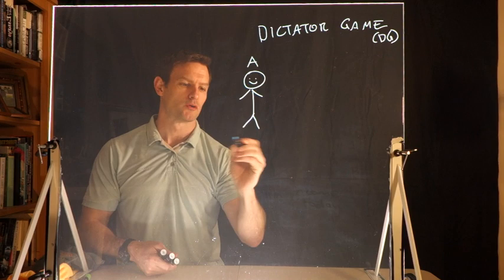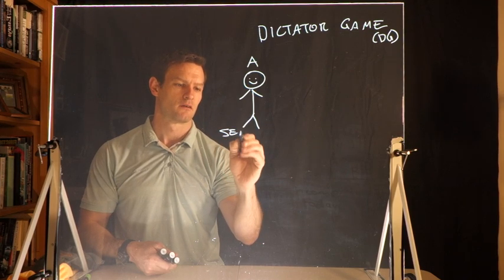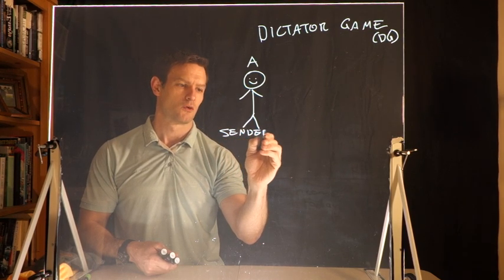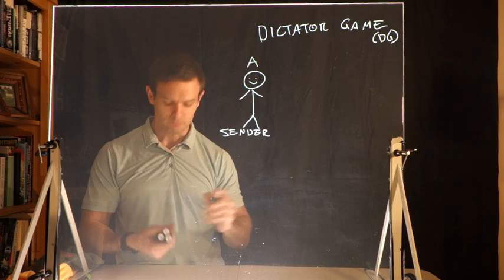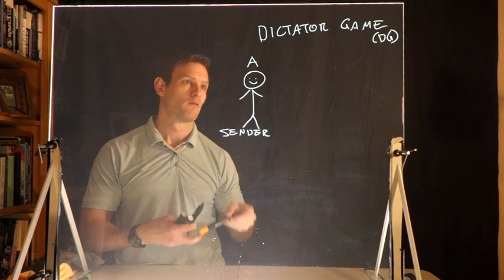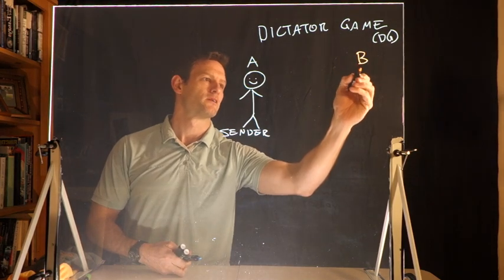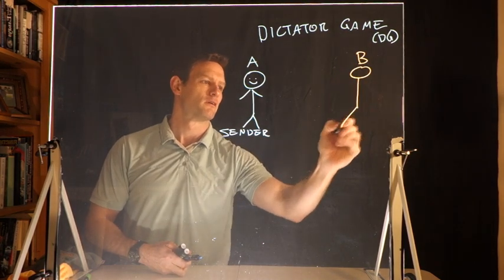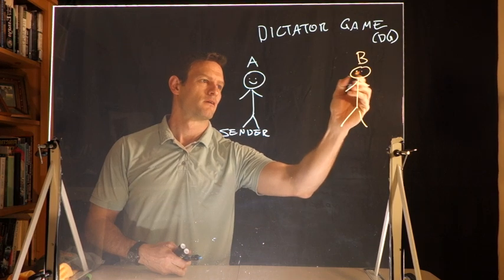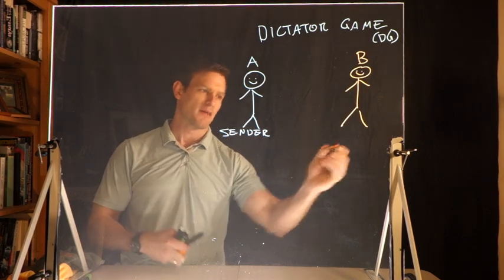A is called the sender or the proposer, and then B is the person they are paired with, the receiver.